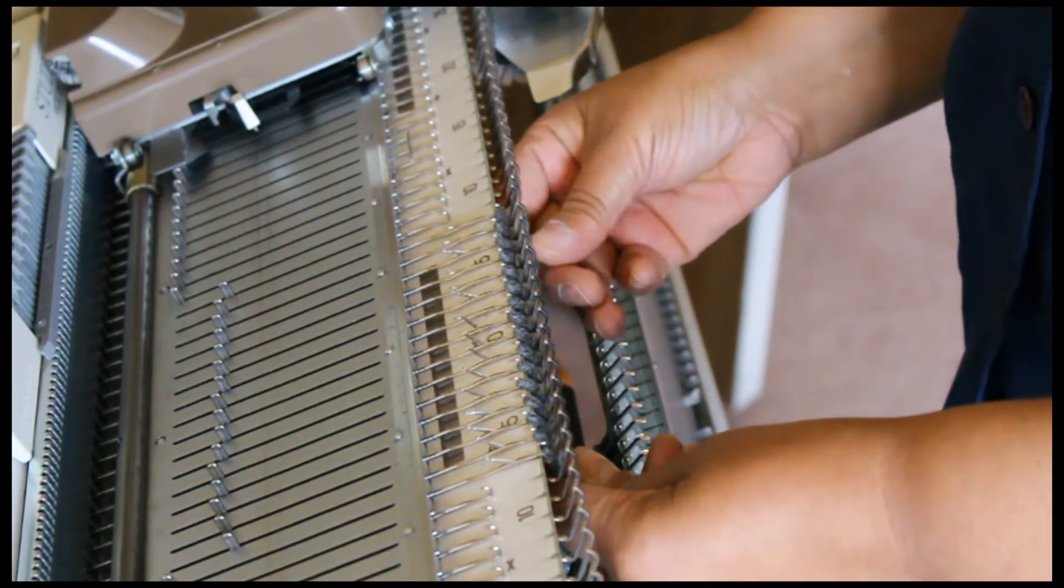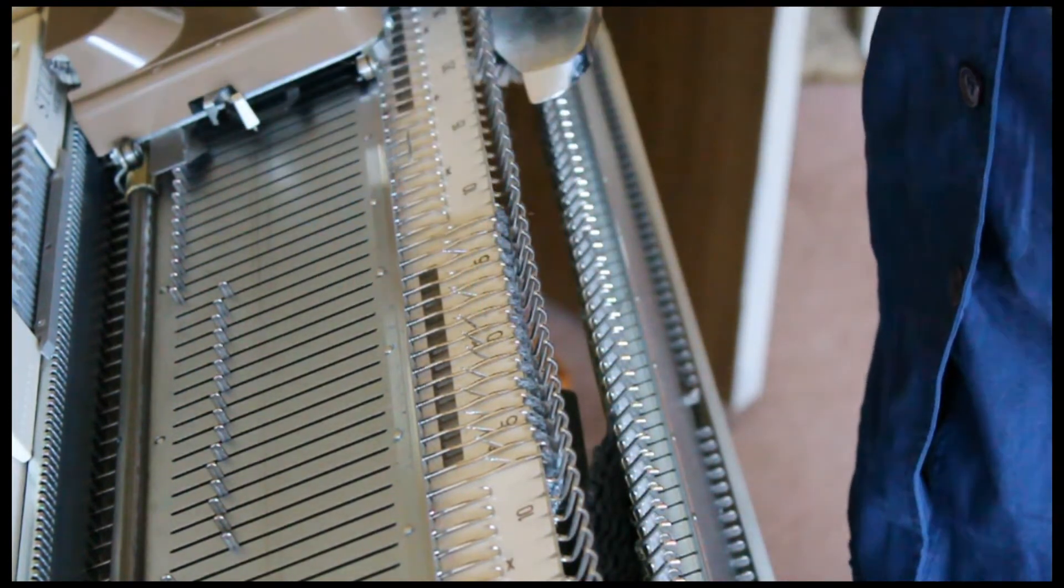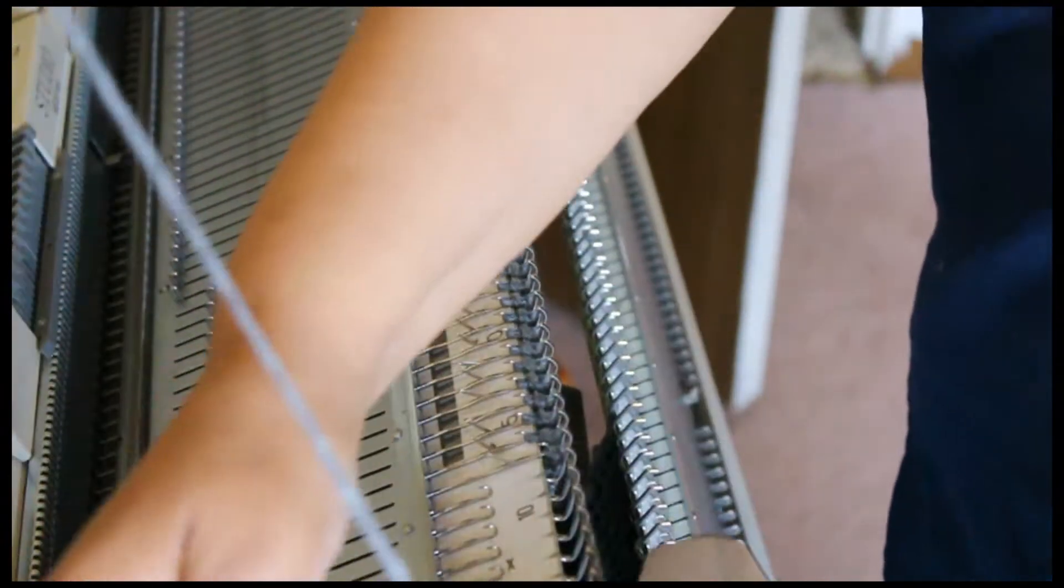We completed the 26 rows. The next step is to knit 4 more rows for the ankle area.